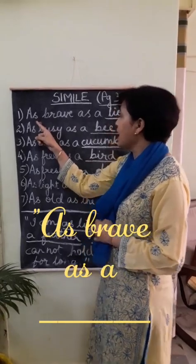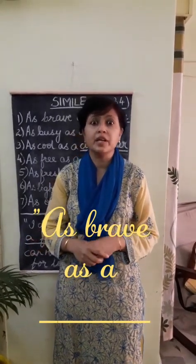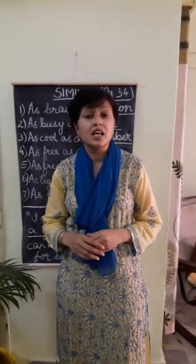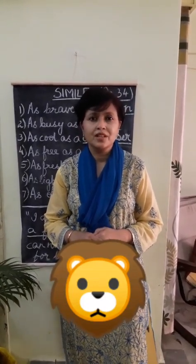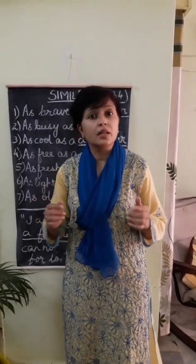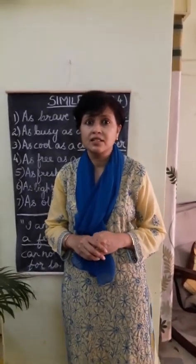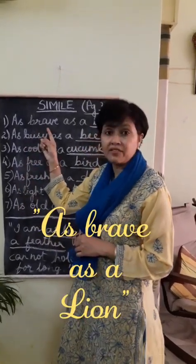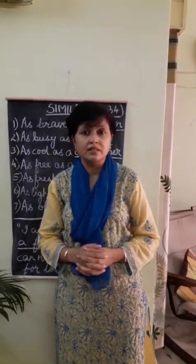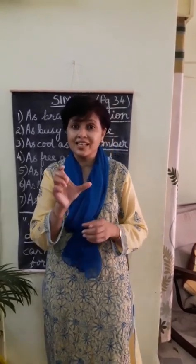The first sentence is 'as brave as a...' From thousands of years, lions are considered to be very brave. When they are in a group — a group of lions is called a pride — they are even brave enough to hunt an elephant, though the elephant is much bigger than a lion. So we have the simile: as brave as a lion. For example, if Rahul is a very brave boy, we say Rahul is as brave as a lion. This sentence is called a simile.